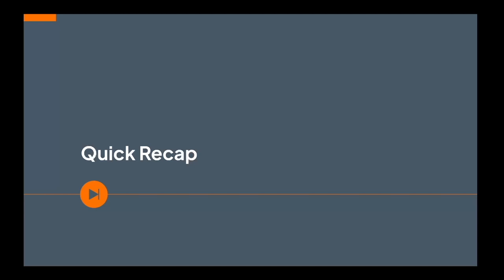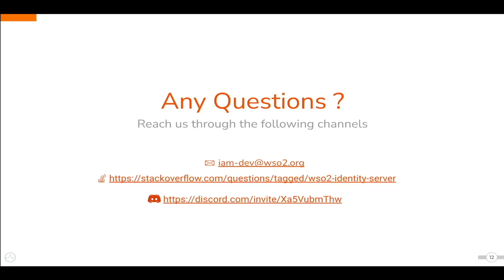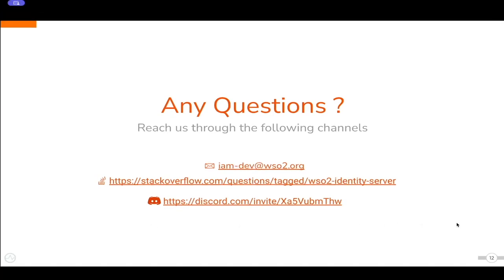We have now come to the end of this training video. Let's have a quick recap of what we learned. First, we got to know the basic attributes of a user account and the key user account management functions. Next, we learned how WSO2 Identity Server handles user registration, password policies, password reset and recovery, account recovery, and account locking, disabling, and suspension. If you have any questions or need further clarification, feel free to get in touch with us. Our email is im-dev@wso2.org. In Stack Overflow, tag your queries with wso2-identity-server. You can also join our Discord server using the invite link. Thanks for watching and hope to meet you in another exciting training video.